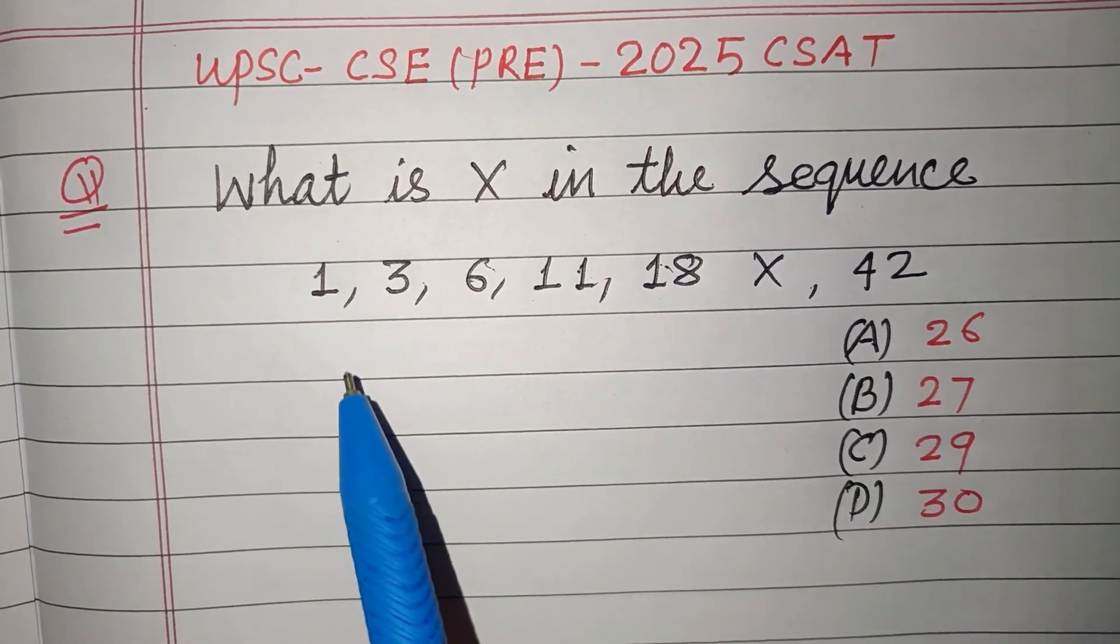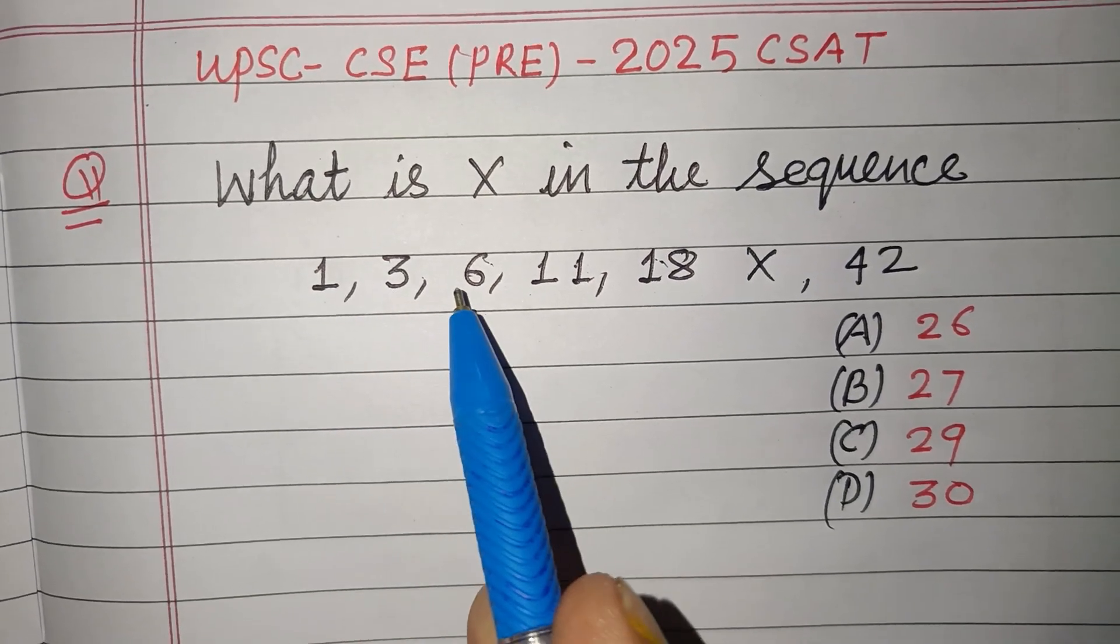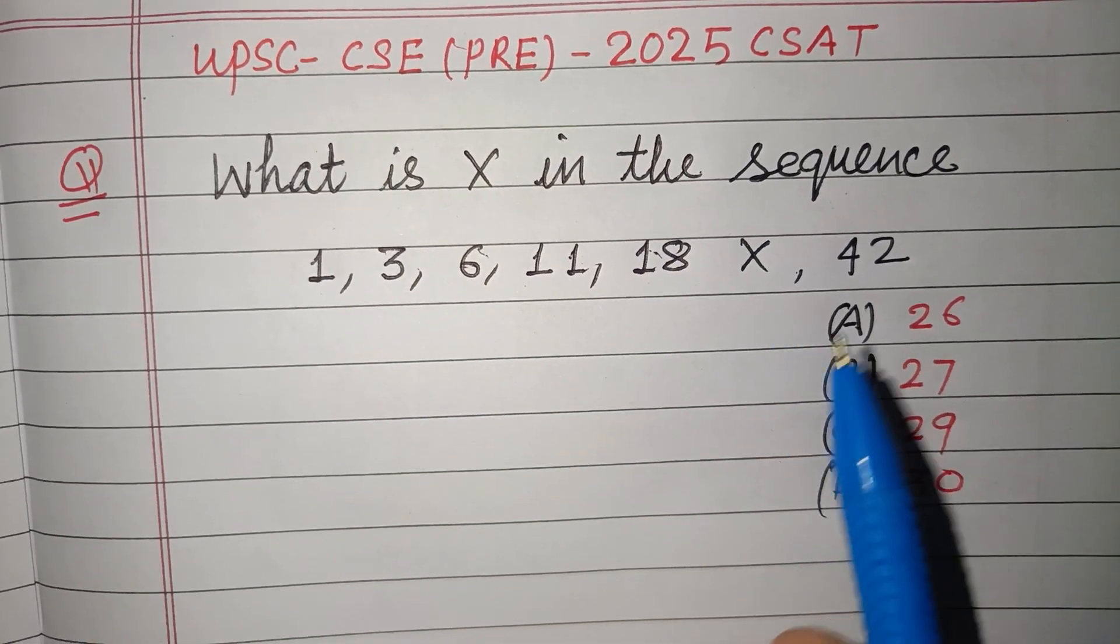What is X in the sequence? So here the sequence is given as 1, 3, 6, 11, 18, X, and 42.